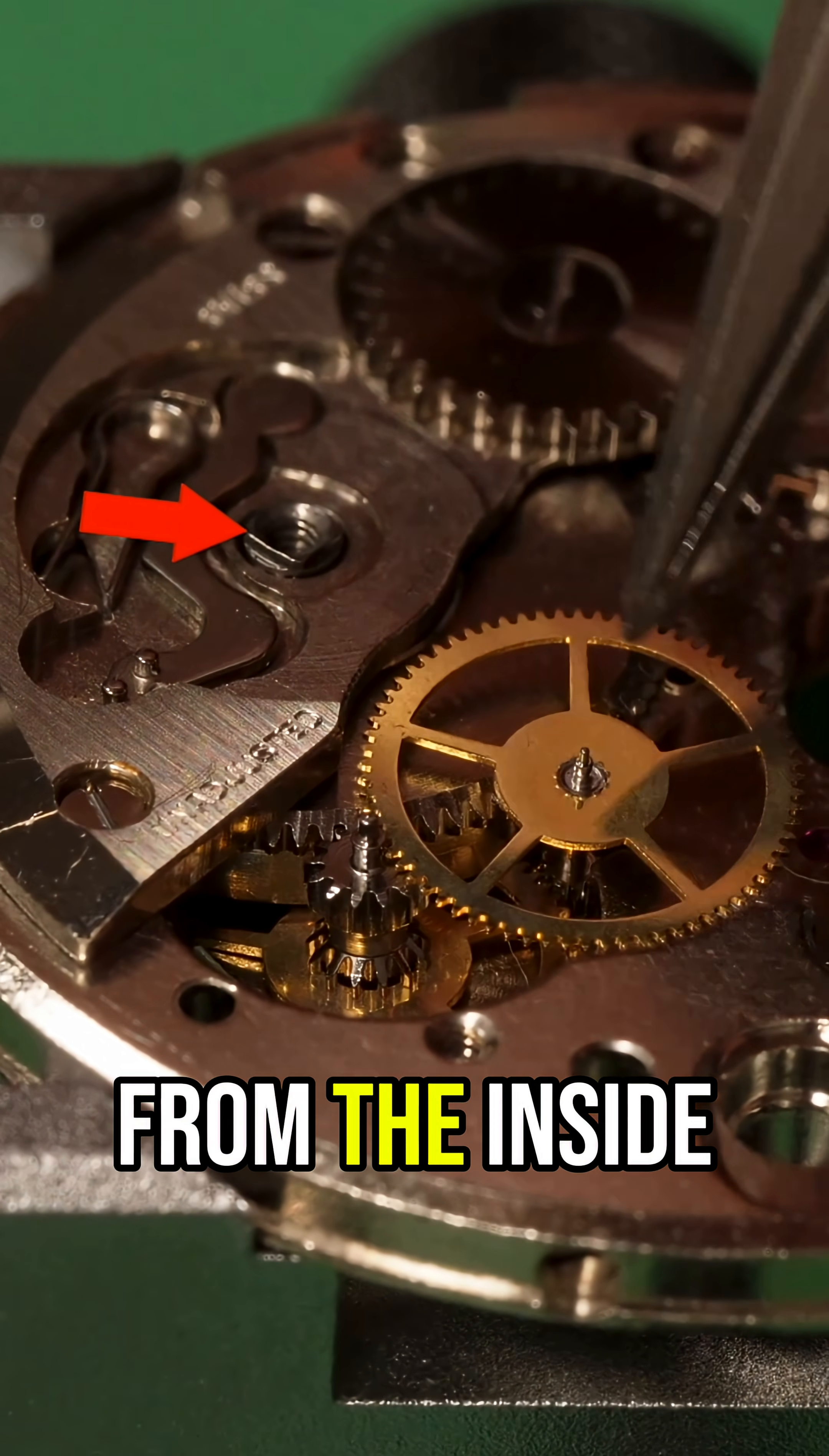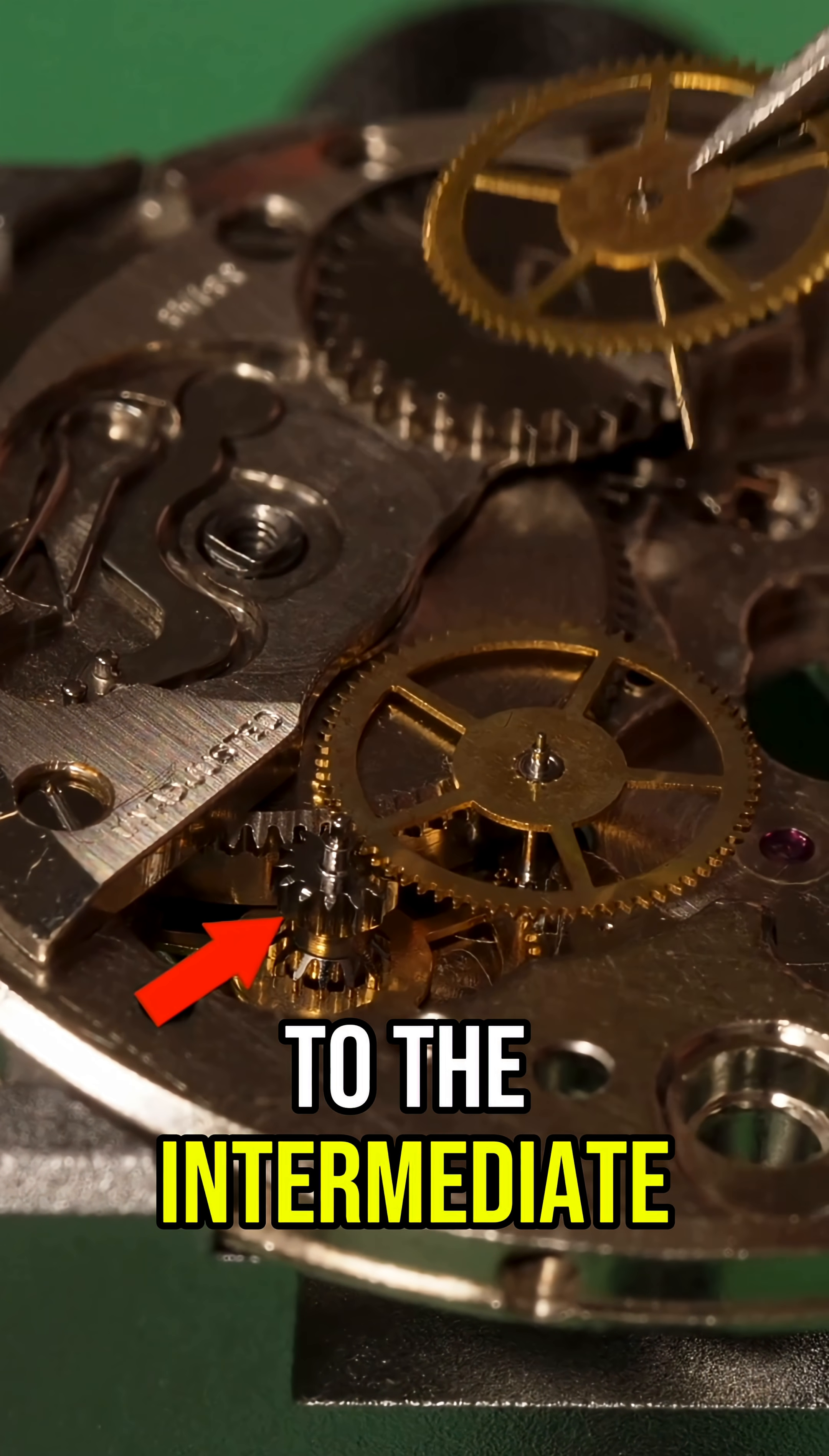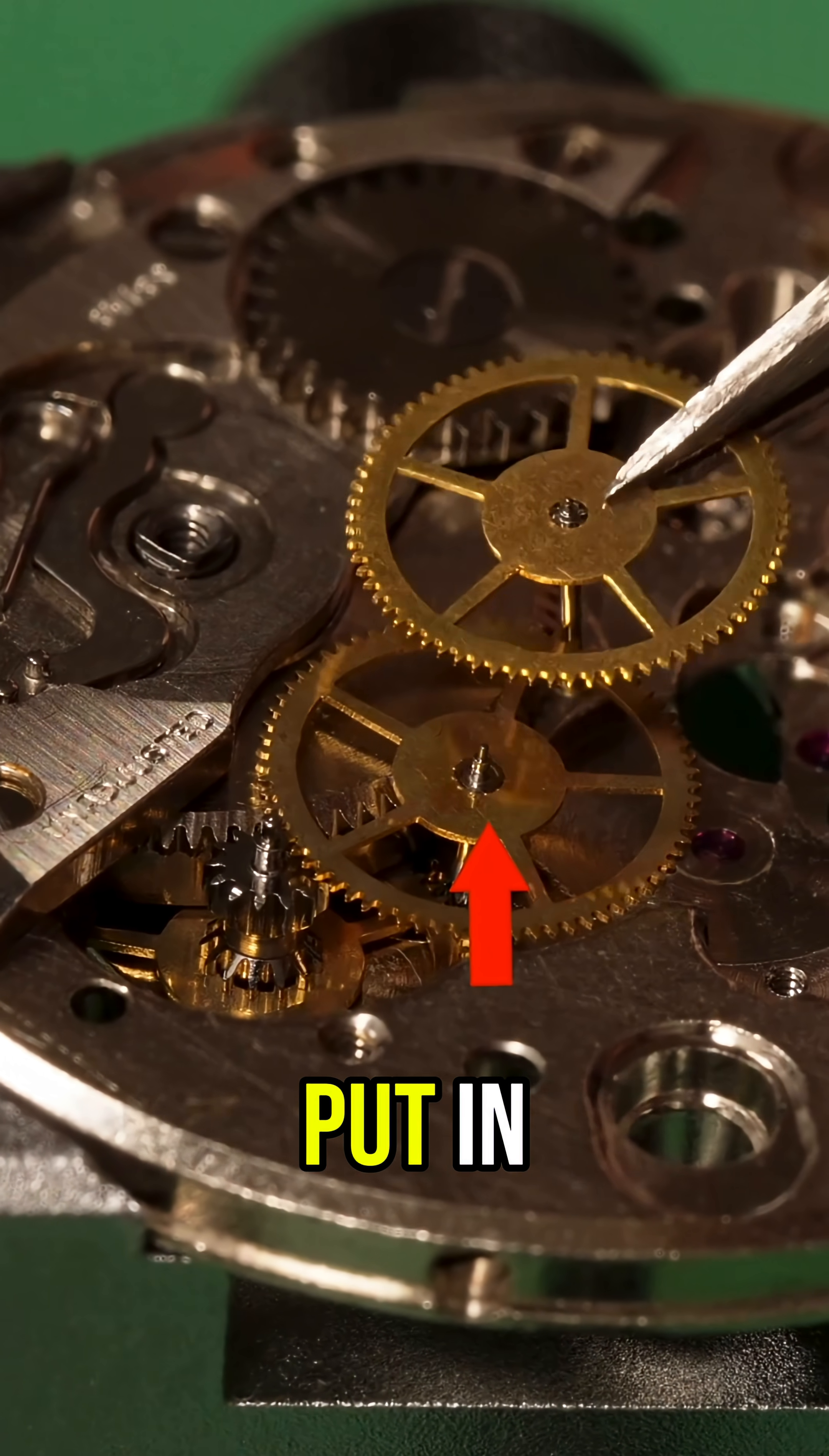The movement from the mainspring goes from the inside of the barrel to the intermediate wheel with the pinion up, and then to the third wheel we just put in.